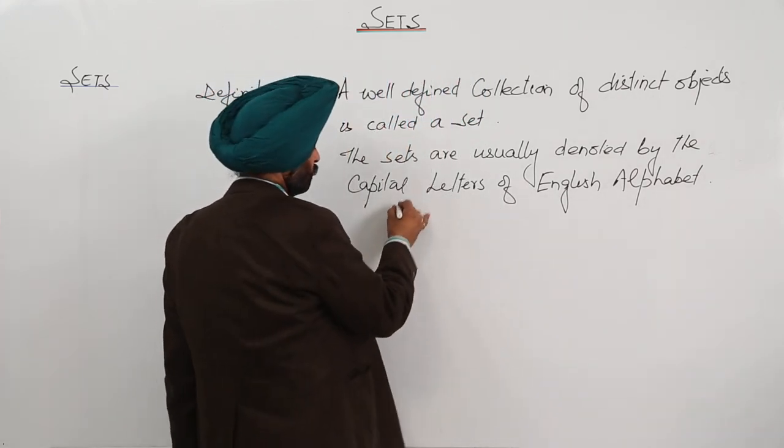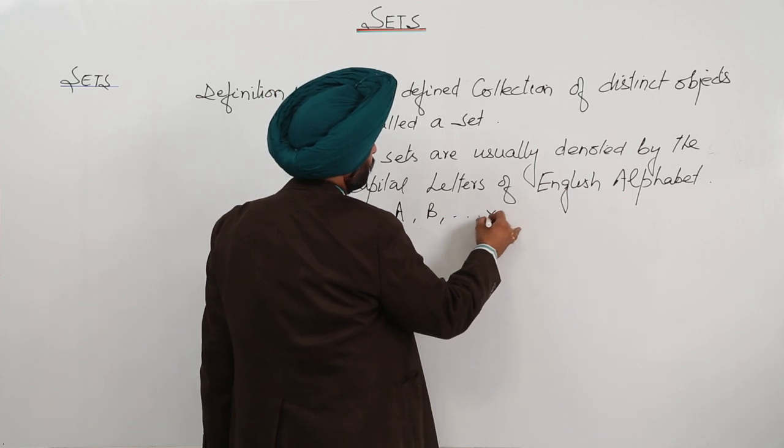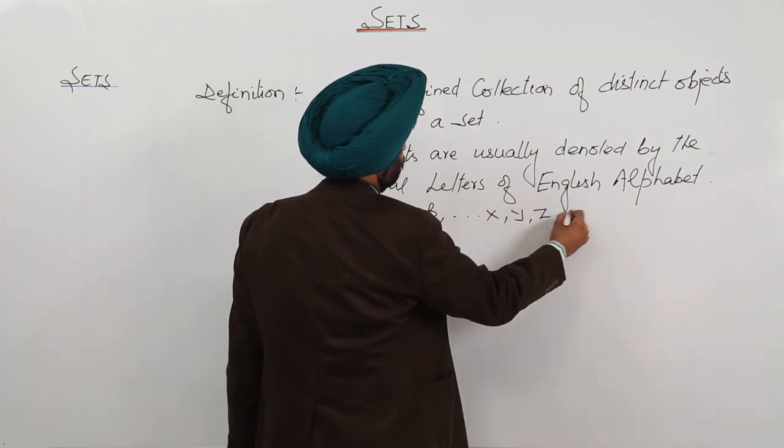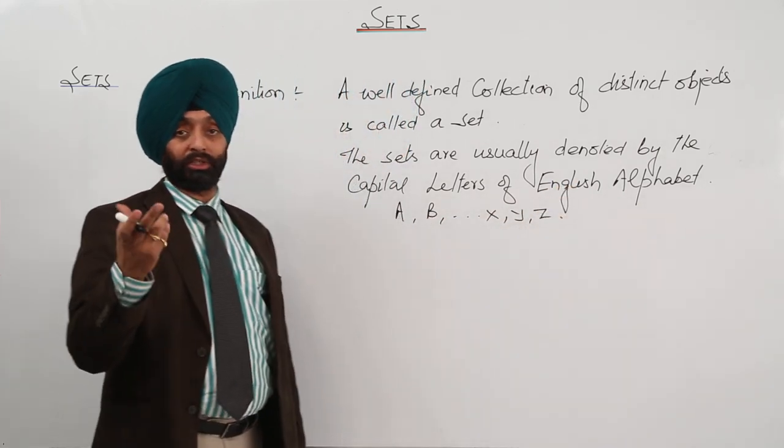We are just denoting it by, we can write it by A, by B, like this, by X, by Y, by Z, but it should be a capital one. It should be a capital one.